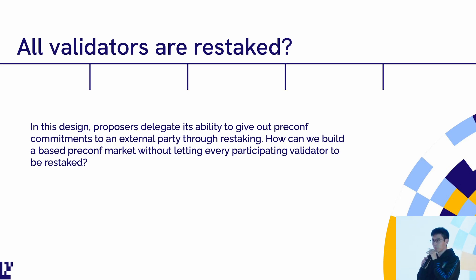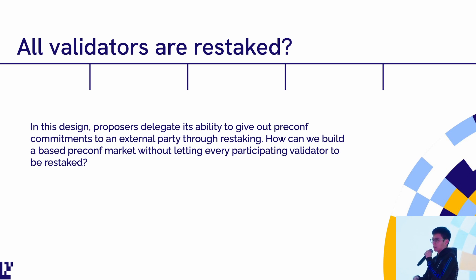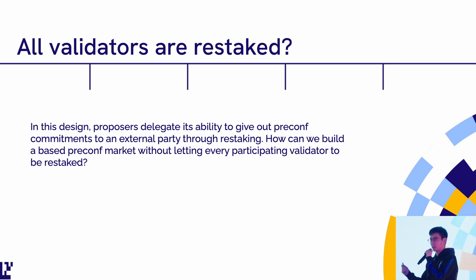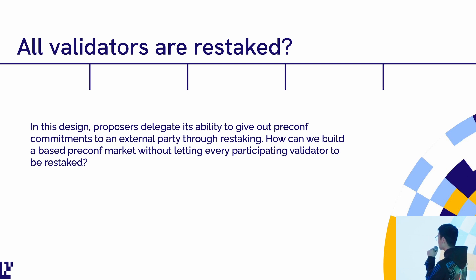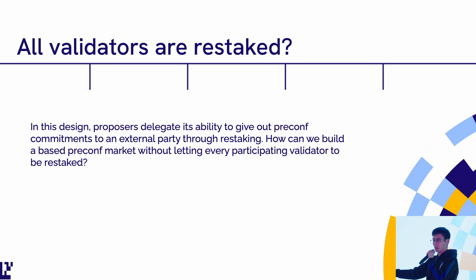What are some problems? The first problem people quickly run into is the cold-start problem. Do we need all validators to be restaked? If only one validator is restaked, it doesn't make sense for any pre-confer to come to market or for any consumer to buy services, because you don't have a big enough slot share to sell a meaningful number of pre-conf slots. So is there a way for validators who are not restaked to also make pre-conf commitments? But that sounds like a paradox — if you don't stake, how can you be slashed? This is something we're currently thinking about.